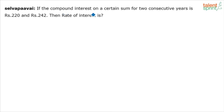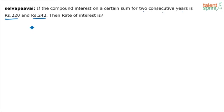The compound interest on a certain principal amount for two consecutive years is ₹220 and ₹242. CI for two consecutive years is 220 and 242. Then what is the rate of interest?